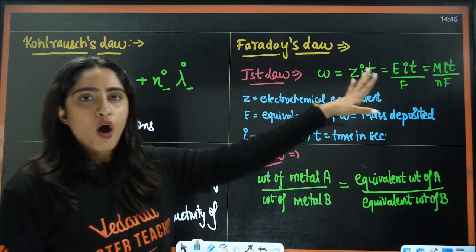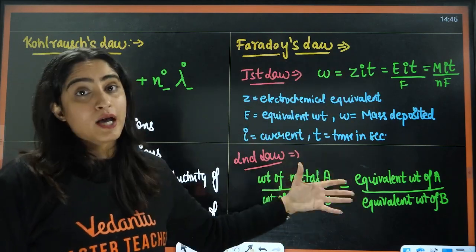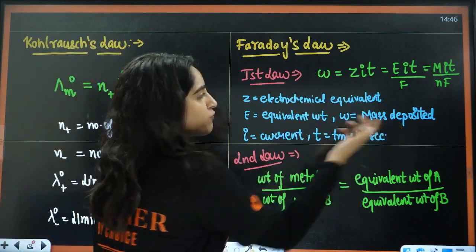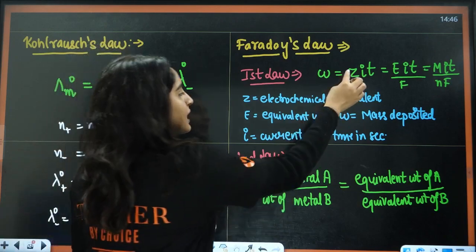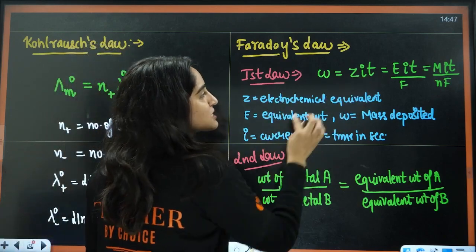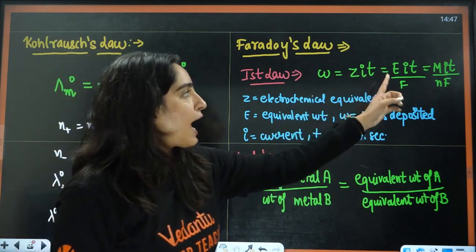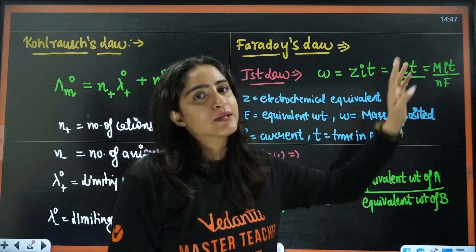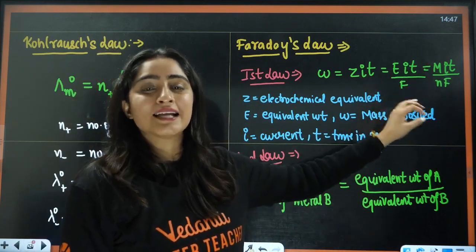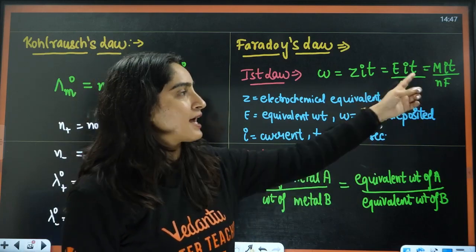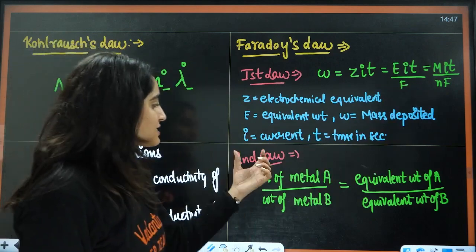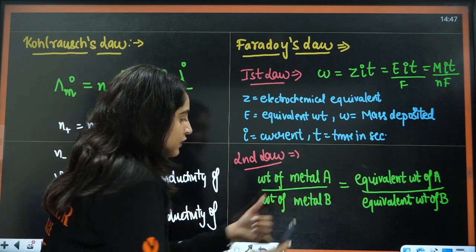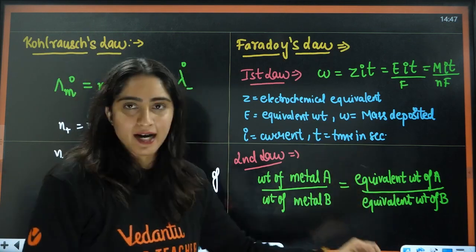Next, we have Faraday's laws. Faraday's first law: W equals Z times I times t, where W is the mass deposited, Z is the electrochemical equivalent, I is current, and t is time. Z equals E divided by F, and E equals molar mass divided by n. So the formula becomes W equals M times I times t divided by n times F, where M is molar mass, F is Faraday's constant (96500), n is the number of electrons gained or lost, and t is time in seconds. Faraday's second law: if we have multiple cells connected in series, weight of metal A divided by weight of metal B equals equivalent weight of A divided by equivalent weight of B.